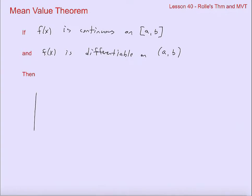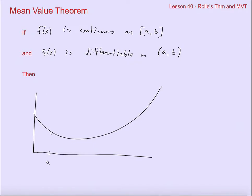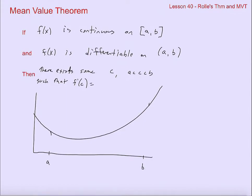Let me just draw a picture of what that would look like. For the most part, it's just a regular old normal function. If you have a function that is continuous on the closed interval from a to b, and also differentiable on the closed interval from a to b, then there exists some c between a and b — so a is less than c is less than b — such that f prime of c, the derivative at c, is the same thing as the difference quotient from a to b: f of b minus f of a over b minus a.